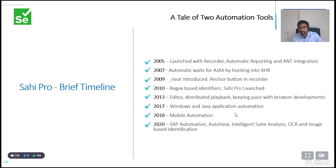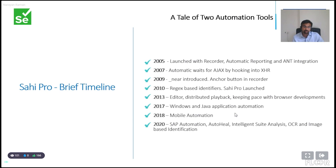In 2005, we launched Sahi. The first version had a recorder, automatic reporting, and integration — we integrated with CruiseControl in our project for continuous integration. Around 2007, we added automatic waits as Ajax was picking up. The way we did it was to hook into the XMLHttpRequest object, listen for callbacks, wrap it, and figure out when Ajax activity started and ended, then move to the next step.